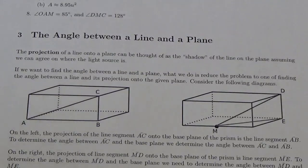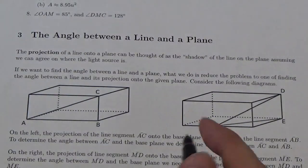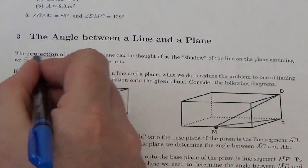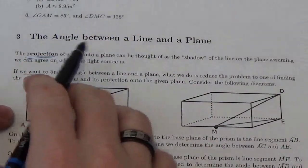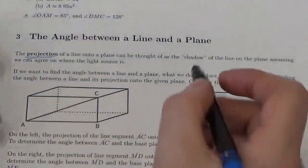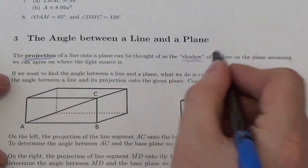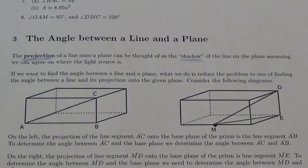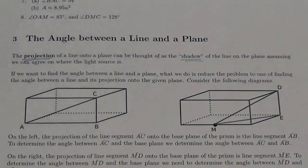Here we're going to throw a little bit of vocabulary on it and make this the primary focus of the work we're doing right now. We're going to talk about something called a projection — the projection of a line onto a plane. You can think of it as the shadow of the line on the plane. That depends on where you think the light source is when we're making this shadow.